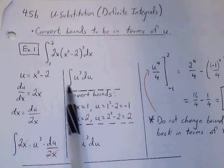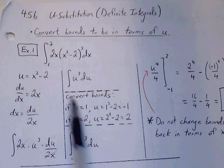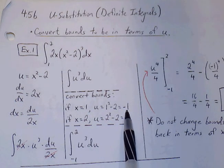we can simply replace x with 1 to find our new bound in terms of u. So u is 1 squared minus 2, which is negative 1. So this is my new lower bound.